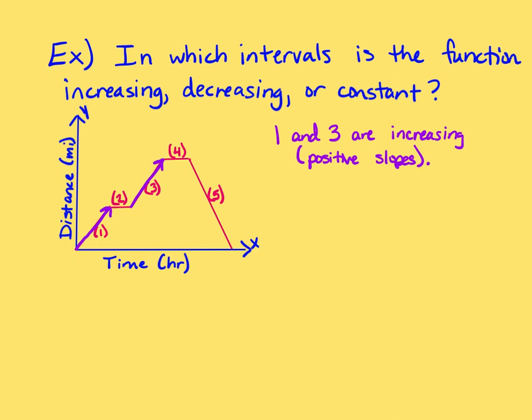And then I have segment two and segment four. They're level. They're not going up, and they're not going down. So, two and four are constant. Notice that they're not going up or down. They have zero slopes.